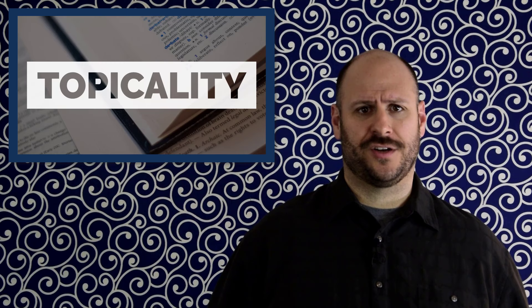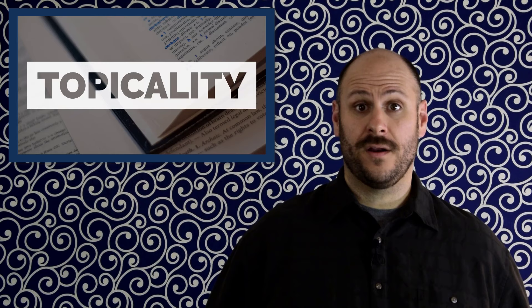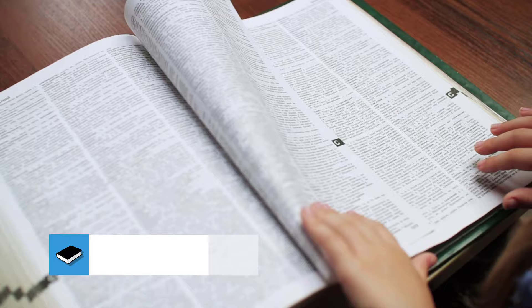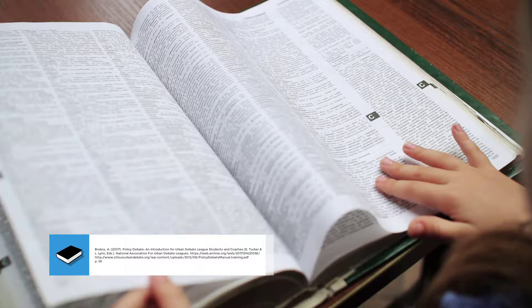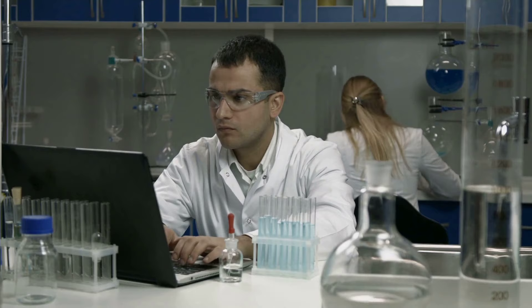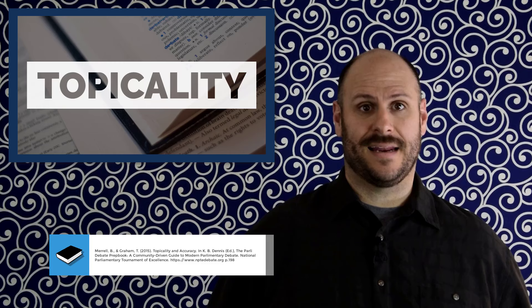First, the interpretation. When making a topicality argument, the negative team should start by explaining what their interpretation of the resolution was. This is most commonly accomplished by providing a cited definition of one or more words that come directly from the resolution. These definitions could come from either a dictionary or an expert in the topic area. Dictionaries work well for common words like substantially. However, when words in the resolution have a specific meaning in the context of public policy, it is best to find definitions that are presented by experts in the relevant field. Such phrases are referred to as terms of art, meaning that the way they are used in a particular field or study differs from their common usage.